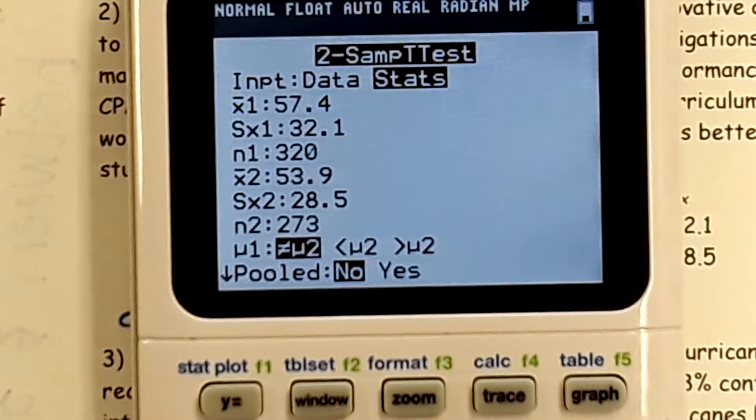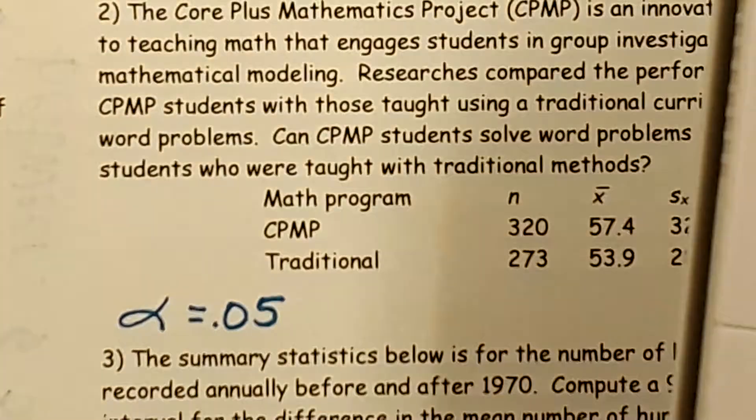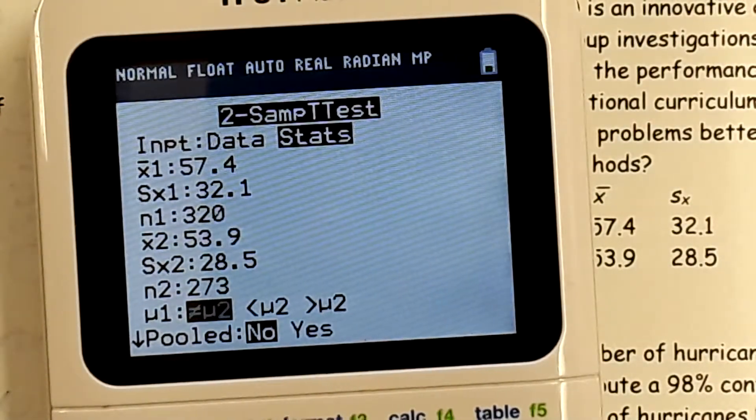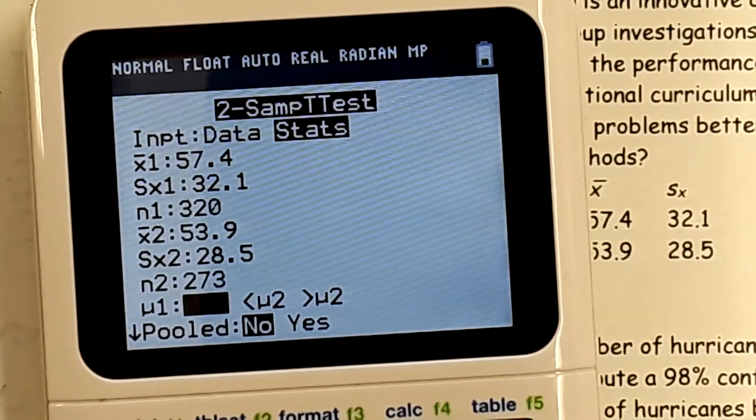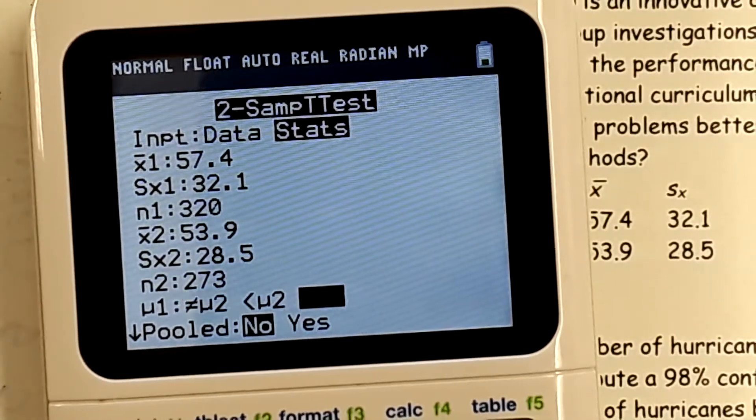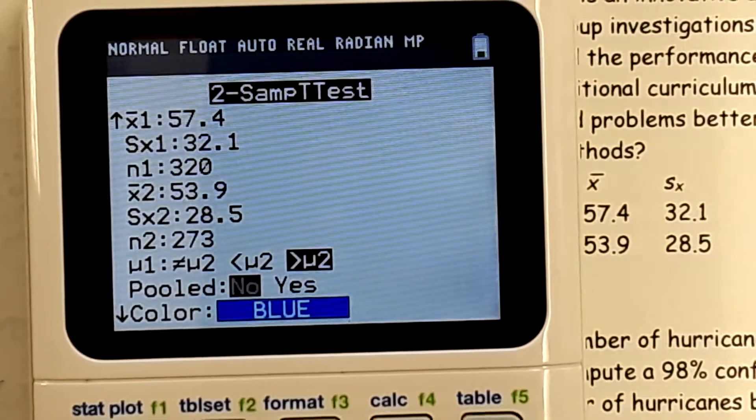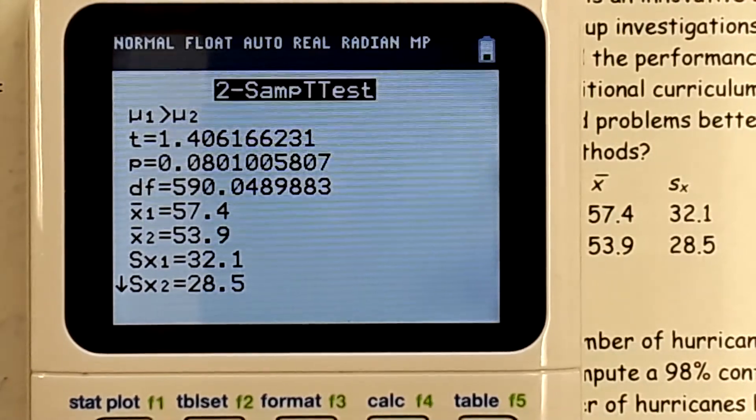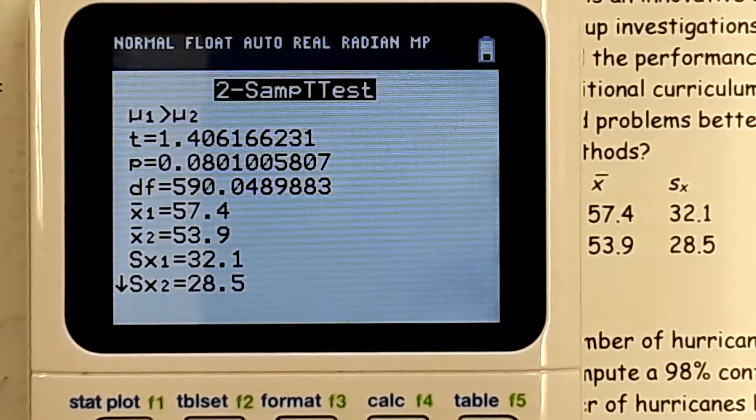Now, here we go. MU1 is the CPMP. So what they're saying, they're going to do better or worse than traditional? Better. So that means we want it to be greater. And do we pool? No. We never pool. And then we hit calculate.